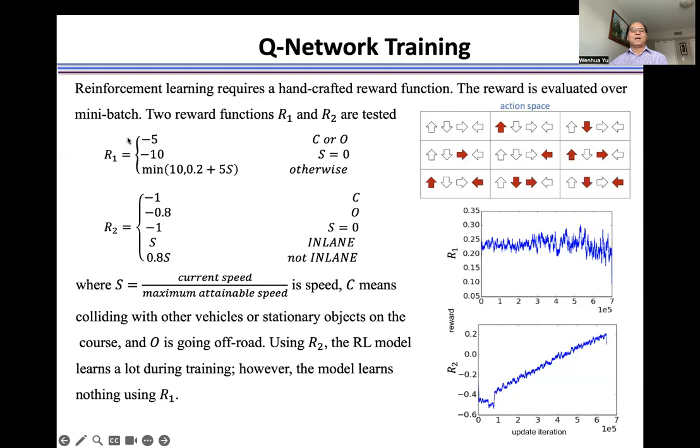We penalize if there's collision or off-road, give a minus five. If we stop on the road with no moving, give a minus ten. Otherwise, we give a reward in other cases. This is R1.